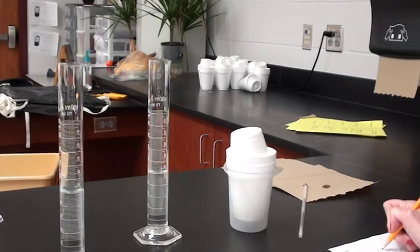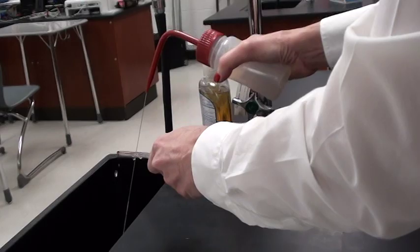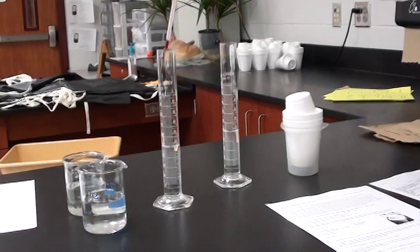Now I will get the NaOH off of the thermometer by rinsing it with water. I will dry it. Now I will take the temperature of the HCl.